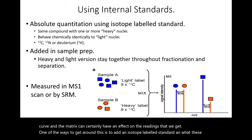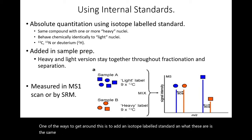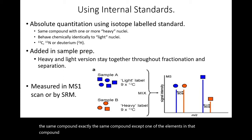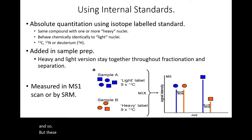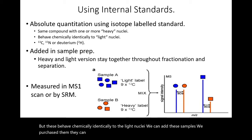What these are is the same compound — exactly the same compound — except one of the elements in that compound has what's called a heavy nucleus. These can be C13, nitrogen-15, or deuterium. They behave chemically identically to the light nuclei. We can add these to samples — we purchase them, they can be a bit expensive — and we add them into the sample during sample prep.